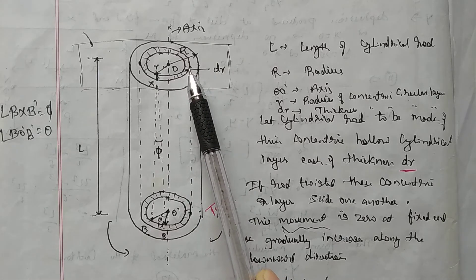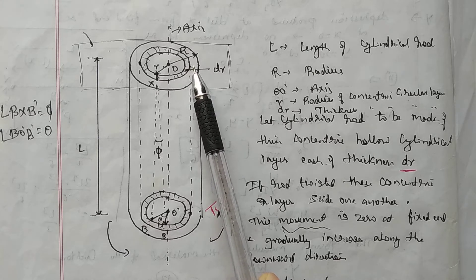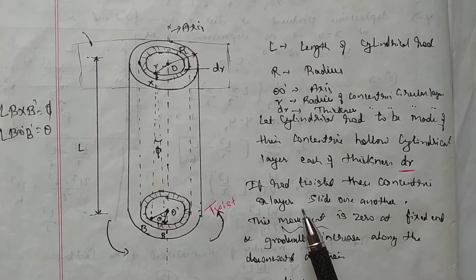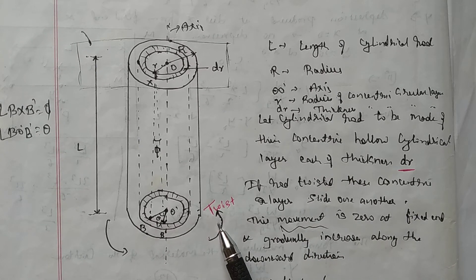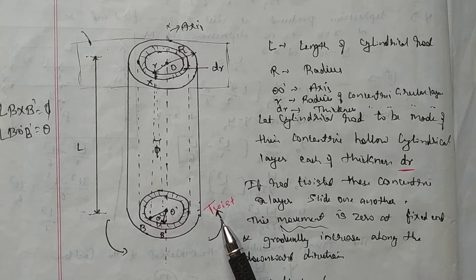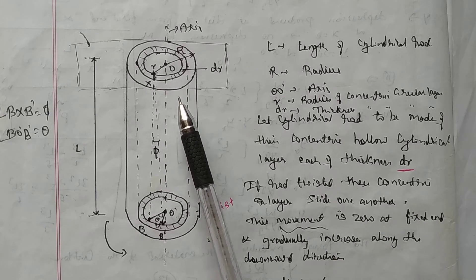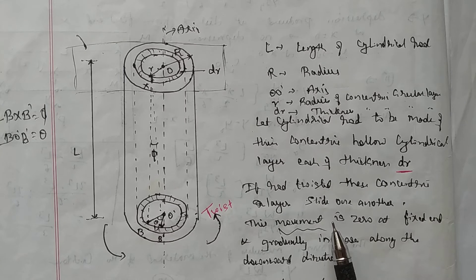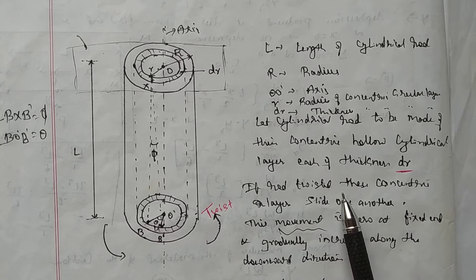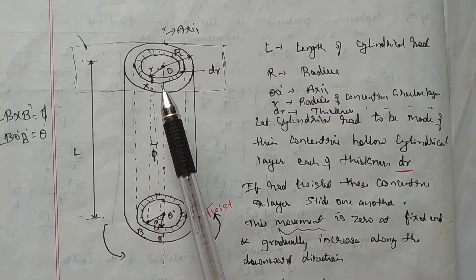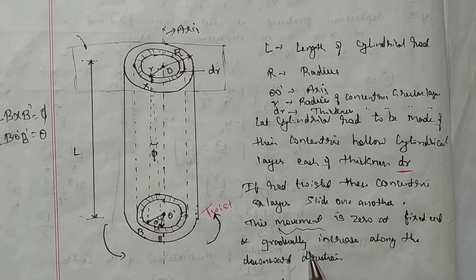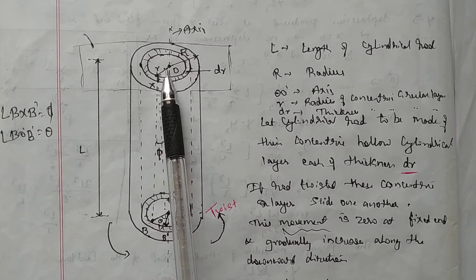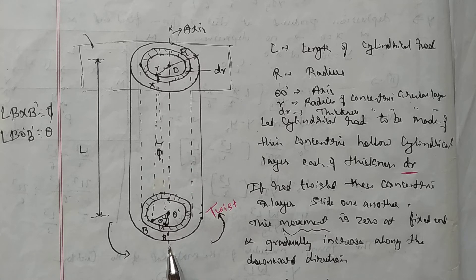Now whenever we give the twist at the lower end, at that time the concentric layers are under stress. Now as I said, whenever the twist is given, these concentric layers slide over each other. So this moment is zero at the fixed end, and it gradually goes on increasing as the distance L increases in the downward direction.